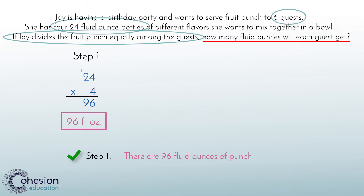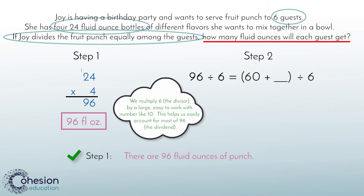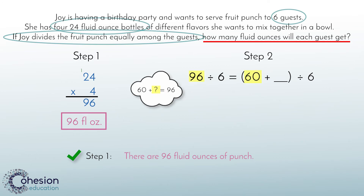Now that we know the total amount of fluid ounces in the punch, we need to evenly distribute it among the six guests at the party by dividing. We will use the break-apart strategy to divide. We want to break 96 into two smaller numbers that can be easily divided by six, meaning the two numbers must be multiples of six. We can start with 60. Now that we have 60, we need to add a number to get 96 — that number is 36, which works perfectly because it is a multiple of six.